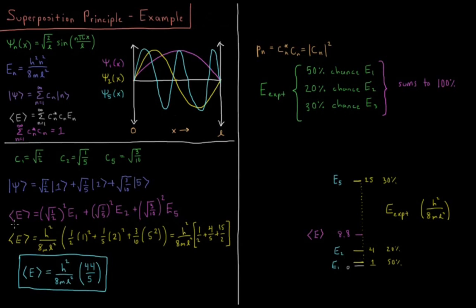What is the average energy? Since all coefficients are real numbers, cₙ* = cₙ, so we just use cₙ² for each prefactor times the energy of that eigenfunction. That gives us: √(1/2)² × E₁ + √(1/5)² × E₂ + √(3/10)² × E₅. Factoring out h²/8mL², we get h²/8mL² times (1/2 × 1² + 1/5 × 2² + 3/10 × 5²).